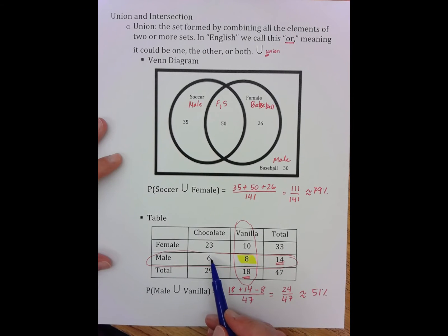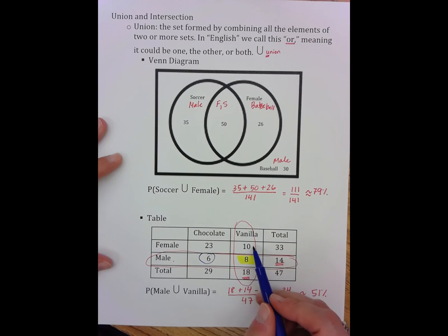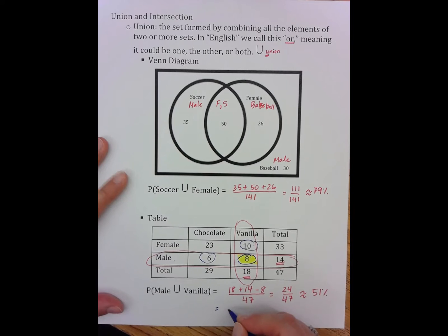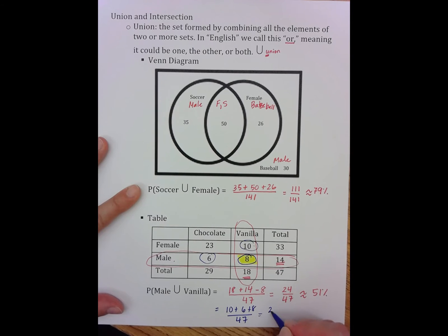Vanilla, male? It's male. Vanilla, male? It's vanilla. Vanilla, male? It's both. And then to take those three numbers and add them up. 10 plus 6 plus 8 out of 47, which is 24 out of 47, which is approximately 51%. So either method,